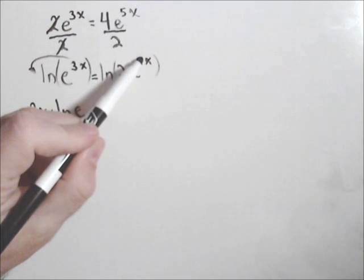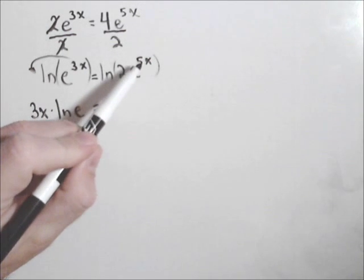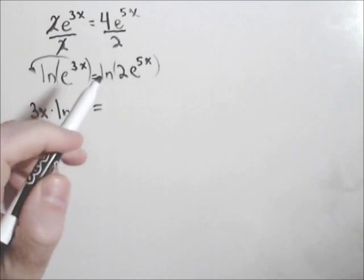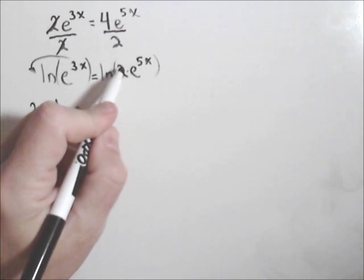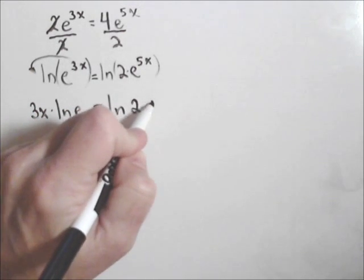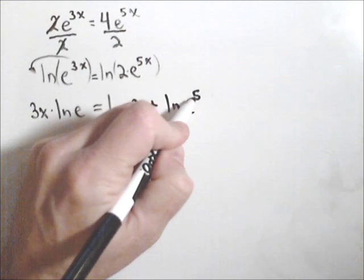Now over here, and this is a common mistake, I cannot pull the 5x out in front right now. The two is not being raised to the 5x. So I'm going to have to use a property of logs first. And that is when we have a product we can write it as the sum of two logs: ln of 2 plus ln of e to the 5x.